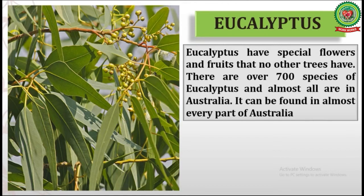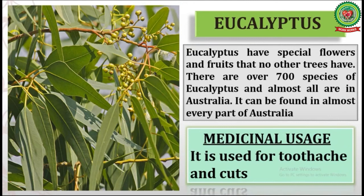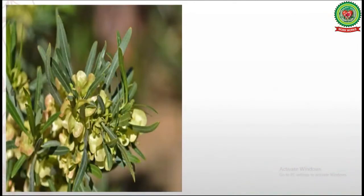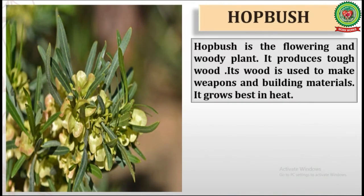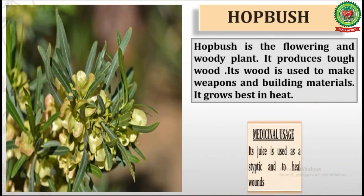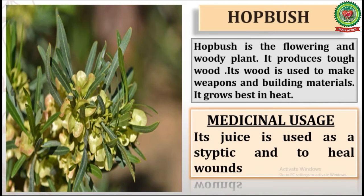Eucalyptus can be found in almost every part of Australia. Medicinal usage: it is used for toothache and cuts. The last one is Hobbush. Hobbush is a flowering and woody plant. It produces tough wood used to make weapons and building materials. It grows best in heat. Medicinal usage: its juice is used as a styptic and to heal wounds.